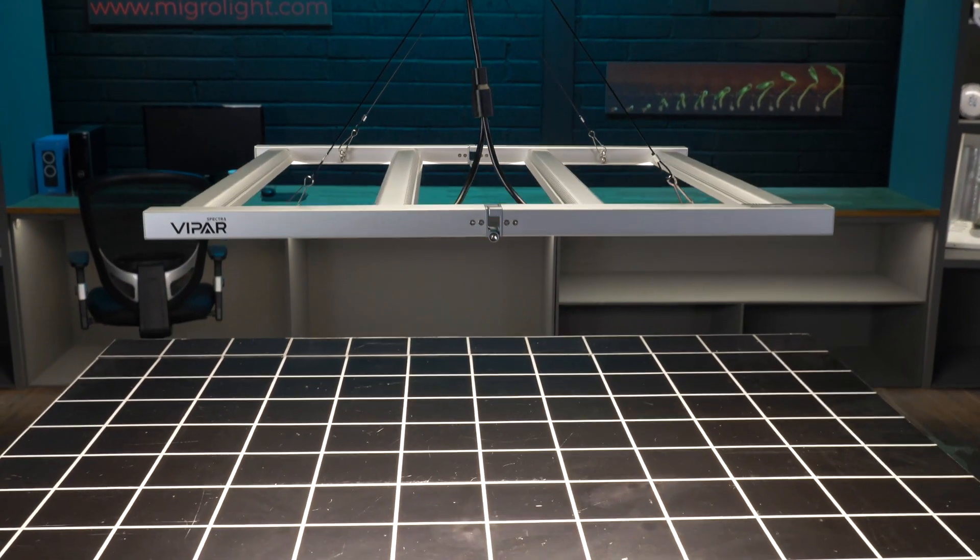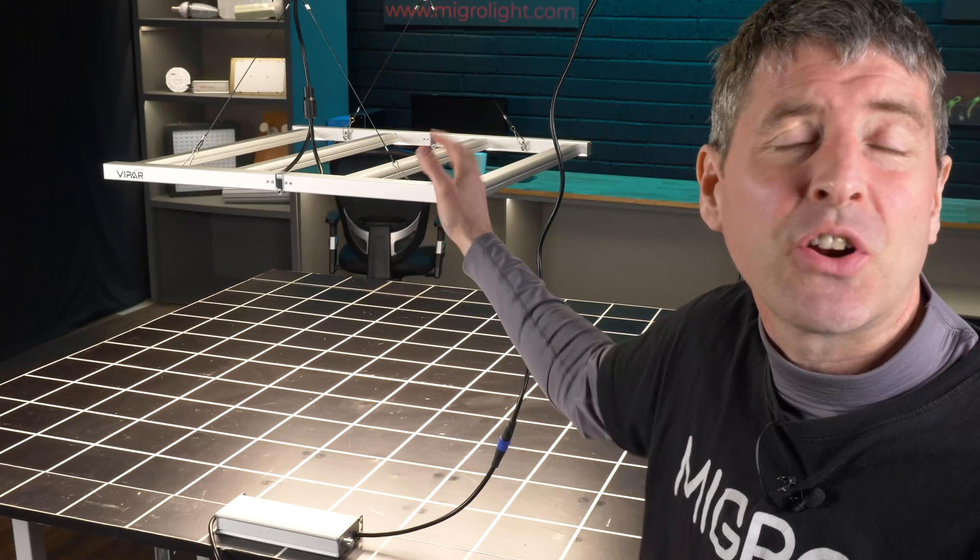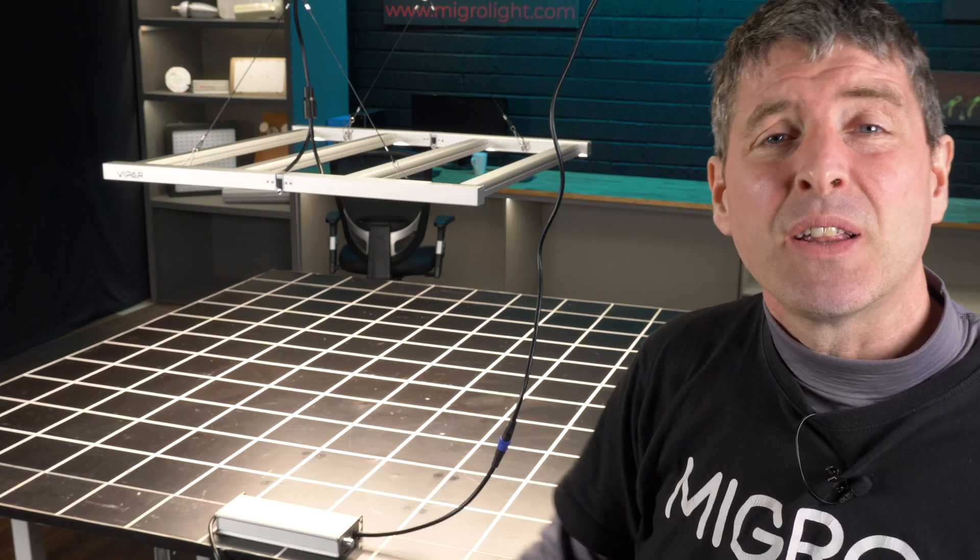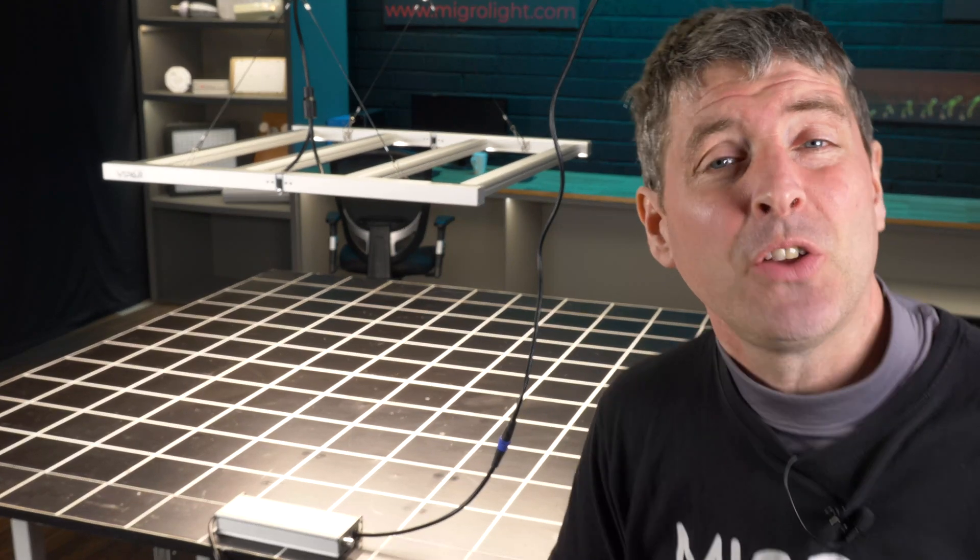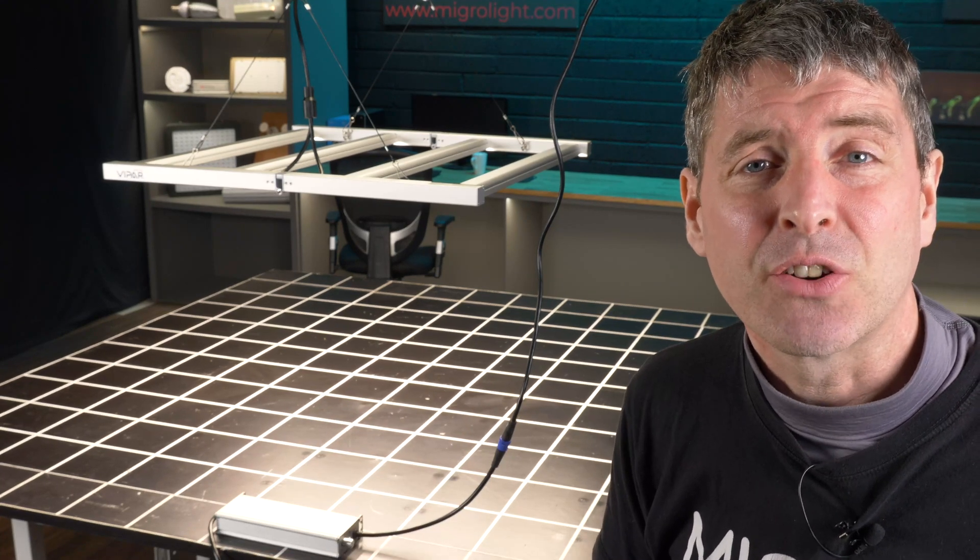It's a big fixture, you might be able to see here, it's just shy of 3 foot by 3 foot, it's 32 inches by 32 inches. This means that it just fits into that 3 foot by 3 foot space. It also means that it gives a really good spread over that grow area.